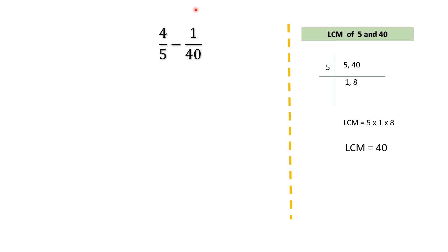So now we will come back to this subtraction. The denominators we have done LCM of the denominators. Now what to do? We will take 40 as the common denominator and then we will apply the same rule. 5 into how much is 40? That will be multiplied to the numerator 4. So 5 into 8 is 40. 8 into 4 we get 32.